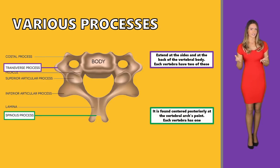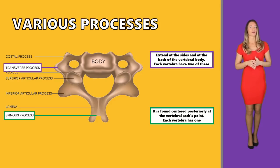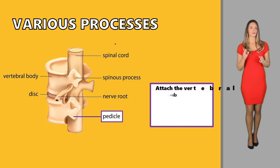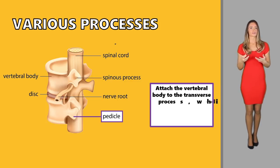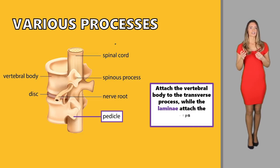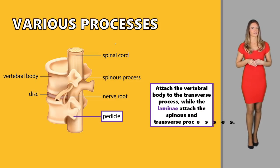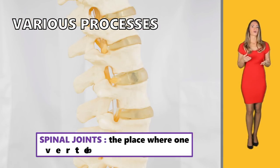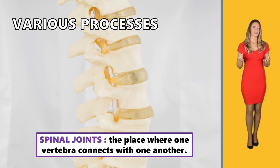We also have the spinous processes. The spinous process is found centered posteriorly at the vertebral arch's point. Each vertebrae has one spinous process. Articular processes form the joints between a vertebrae and the vertebrae above and below it. Pedicles attach the vertebral body to the transverse process, while laminae attach to the spinous process and transverse process. Facet joints, on the other hand, are the spinal joints — the place where one vertebrae connects with the other.